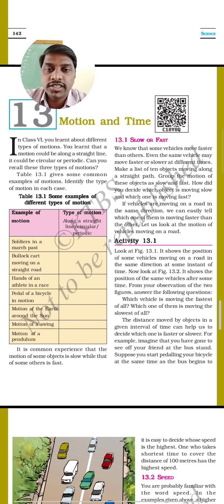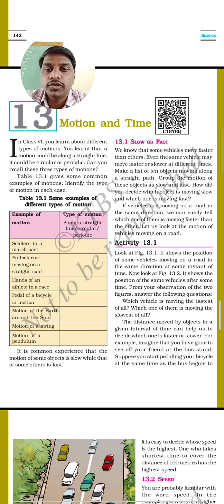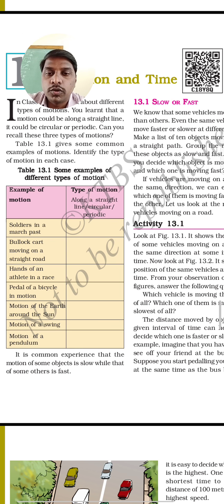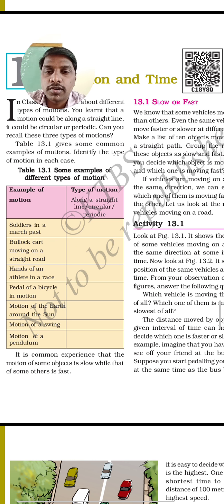Can you recall these three types of motions? In table 13.1, they have given some common examples of motions. Identify the types of motion in each case. A bullock cart moving along a straight road is straight line motion. Hands of an athlete in a race is an example of periodic motion. A pedal of a bicycle in motion is circular motion. You can identify and write the different types in this tabular column.